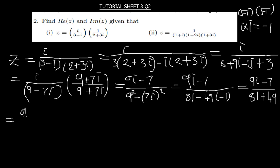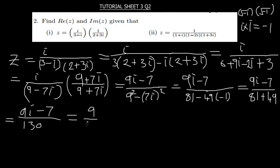So we are going to have: splitting the fraction gives us 9i over 130 minus 7 over 130. You can swap them and write them in the standard form: negative 7 over 130 plus 9 over 130 times i.